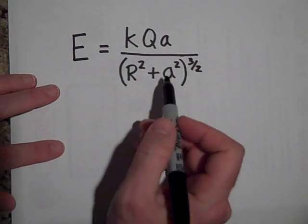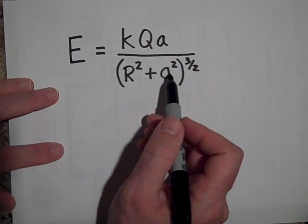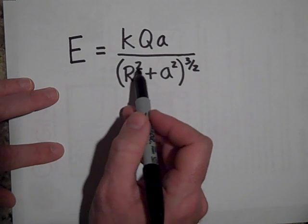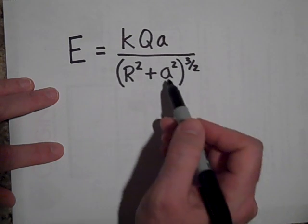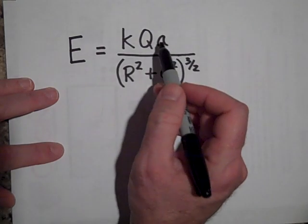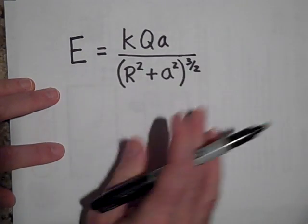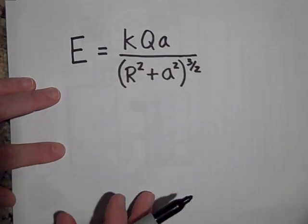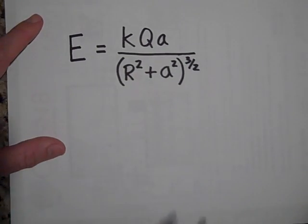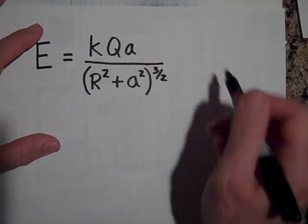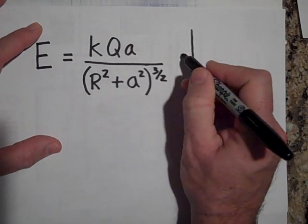And let's take a look at our equation. If I make a equal to zero, then this bottom part is just going to be r cubed because that will be zero. But this being zero means the whole thing goes to zero. So yes, it's predicting that right at the center of the charge, the electric field is zero.